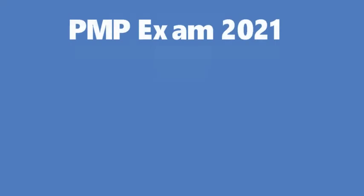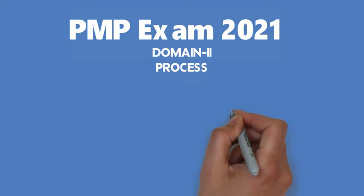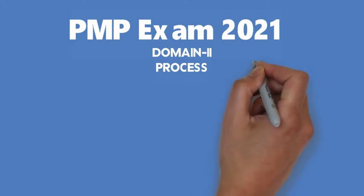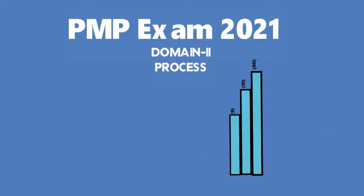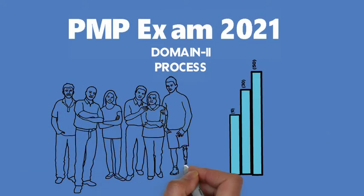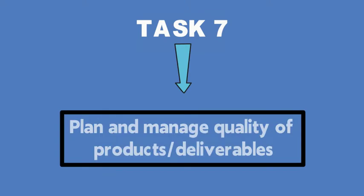PMP Exam 2021, Domain No. 2: Process. Percentage of items on the test: 50%. Task 7 — Plan and manage quality of products and deliverables.